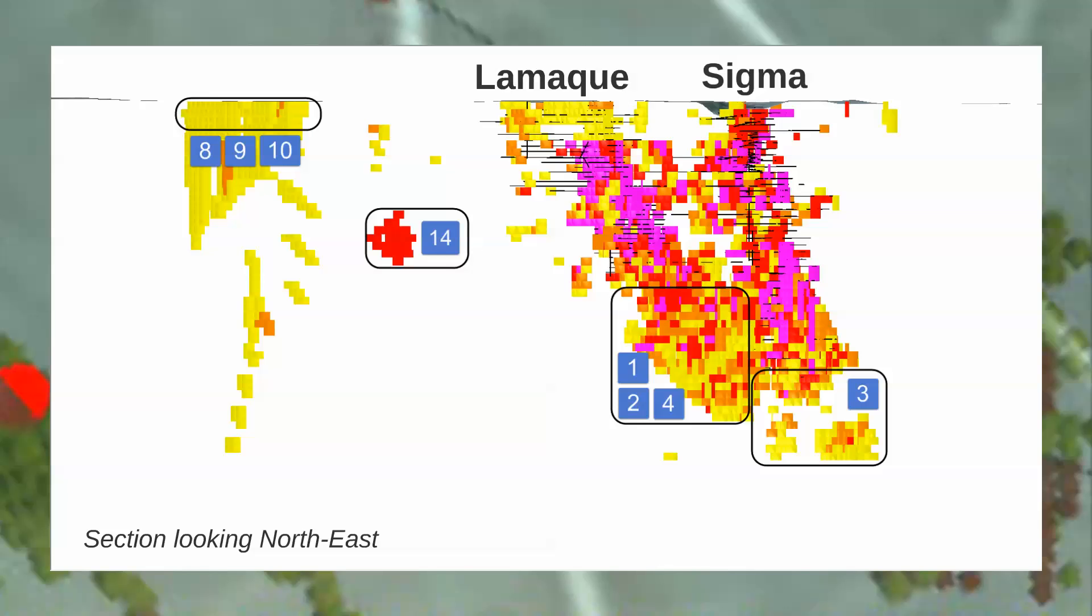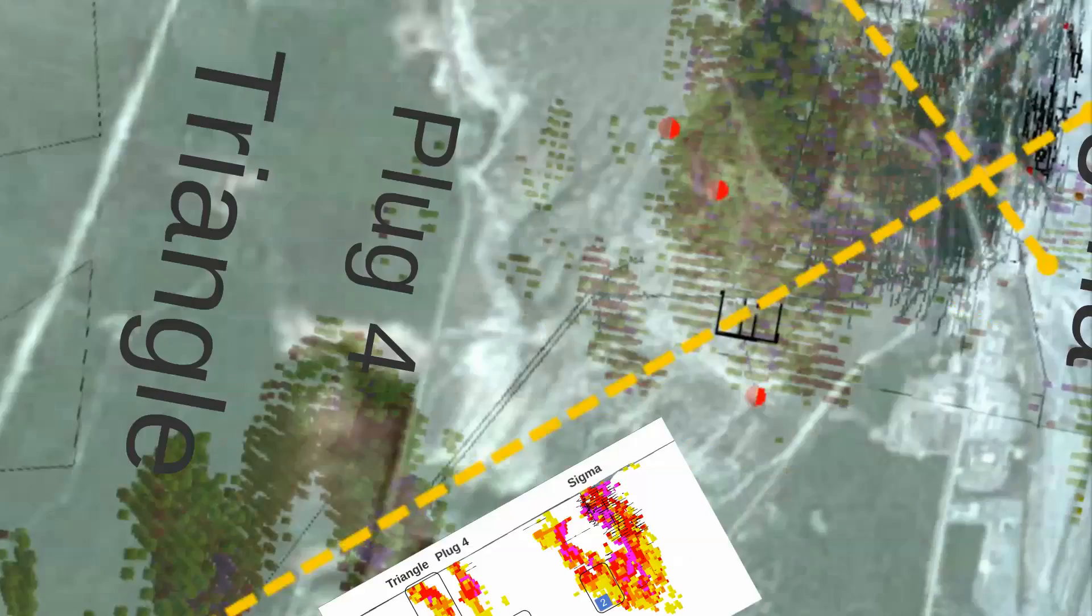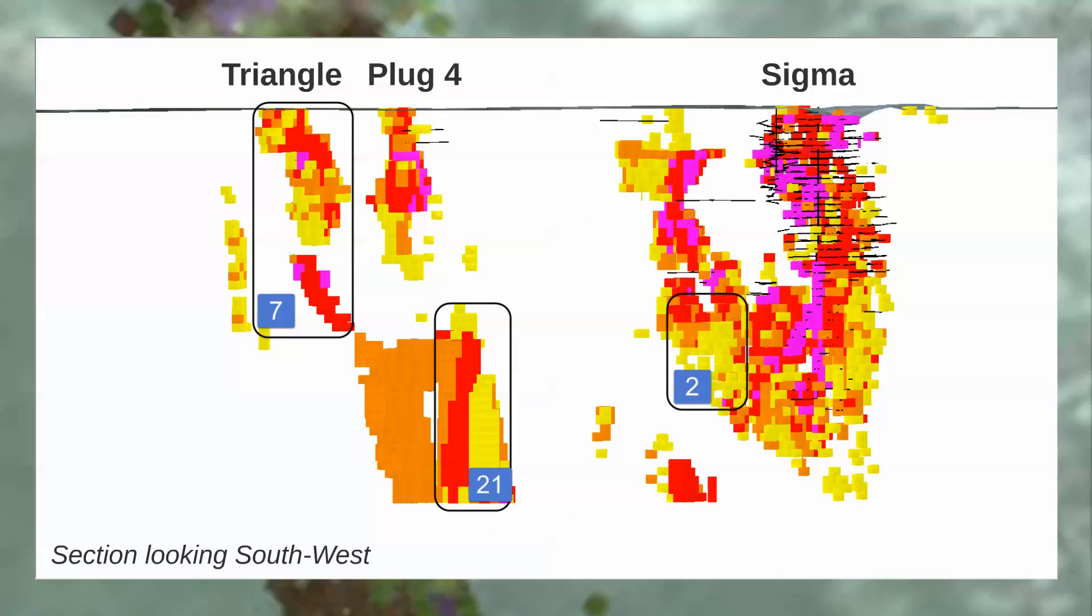Note that not all of these target numbers made the final cut after our vetting process. This is a separate section showing the relative position of the Triangle and Plug-4 deposits. For us, this was the most important test because there was only a single hole in the database from Triangle, yet it stands out clearly as a high-value target.